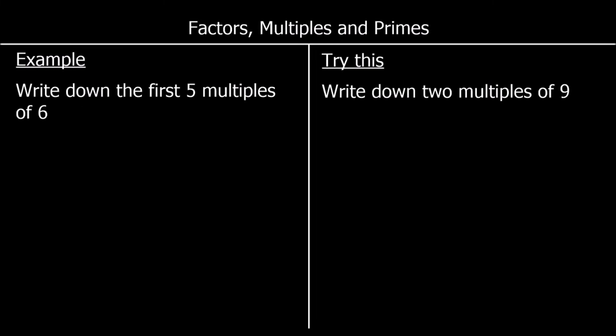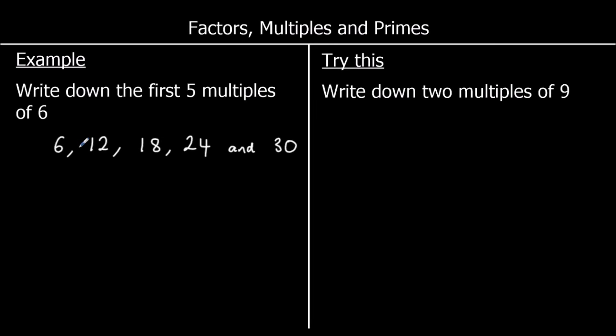Moving on to multiples now. The multiples of a number are all the numbers in its times table. So the first 5 multiples of 6 are the first 5 numbers in the 6 times table: 1 times 6 is 6, 2 sixes are 12, 3 sixes are 18, 4 sixes are 24, and 5 sixes are 30. Those are the first 5 multiples of 6.